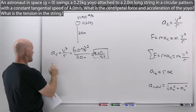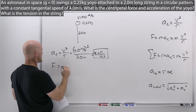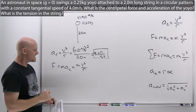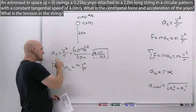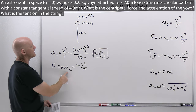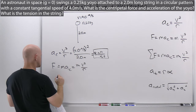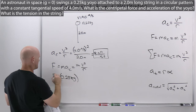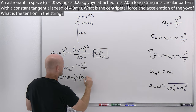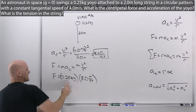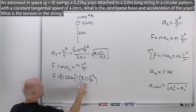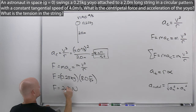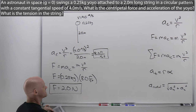For the centripetal force, we use F = m times a_c, or mv²/r. Since we've already calculated the centripetal acceleration, we can plug that in directly. The mass was given as 0.25 kilograms times the centripetal acceleration of 8.0 meters per second squared. 0.25 is one-fourth, and one-fourth of 8 is 2 newtons — so to two sig figs, the centripetal force is 2.0 newtons.